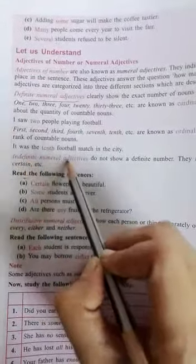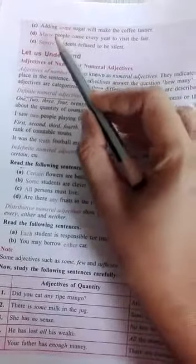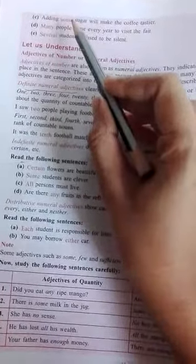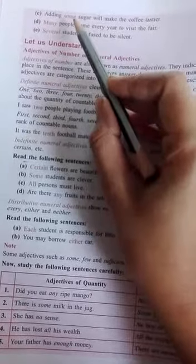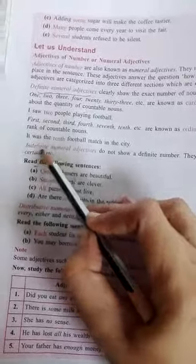Indefinite - and that is how we can understand. Some, many, few, certain - now you can understand. Some, many - yes, as some adjective of quantity, adjective of quantity related. Indefinite numeral adjectives.